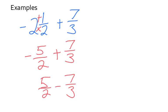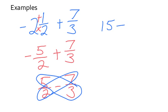And in this case I'm going to go ahead and do my bowtie. 5 times 3 is 15 minus 2 times 7 is 14 all over product of your denominators 2 times 3 is 6. Now from here 15 minus 14 is 1 over 6. And so I have a solution of 1 sixth.